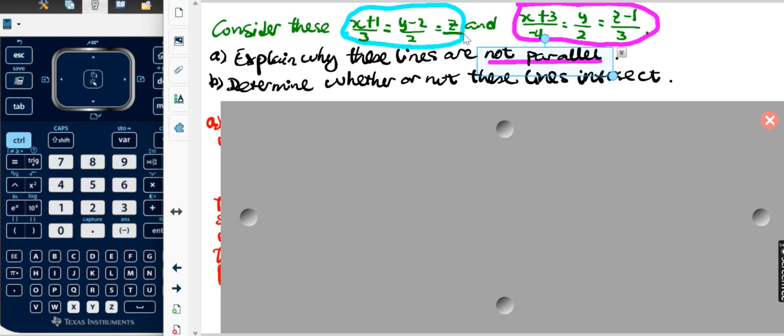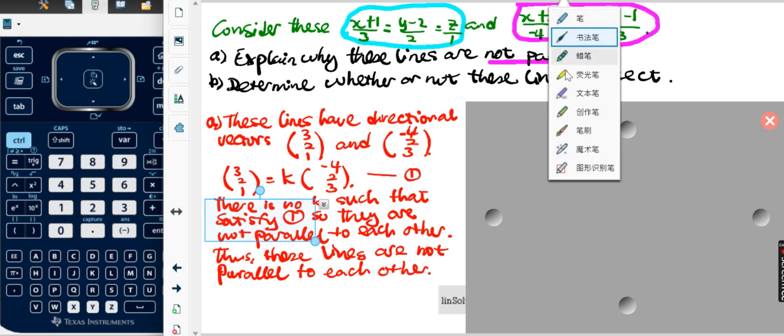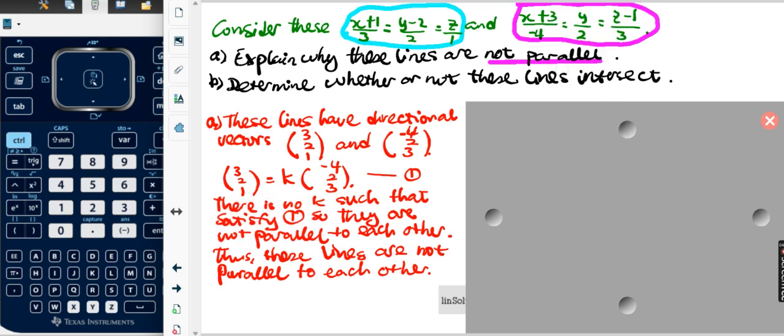If they're not parallel, we need to consider their direction. The directions are in the numerator. Here, these lines have directional vectors three, two, one. And the second one in purple is negative four, two, and three.